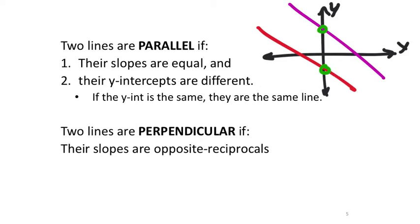If the y-intercepts were the same, it would just be one line drawn on top of the other — you would have one line twice. That may happen. Two lines are perpendicular if their slopes are opposite reciprocals. When we talk about 'opposites,' we're talking about the signs of the slopes — positive or negative. If one is positive, the other has to be negative; if one is negative, the other has to be positive.